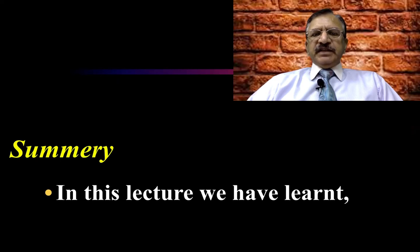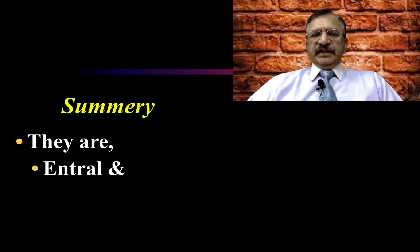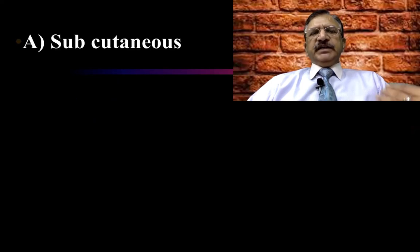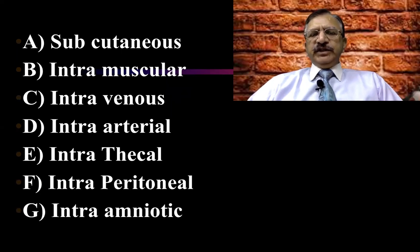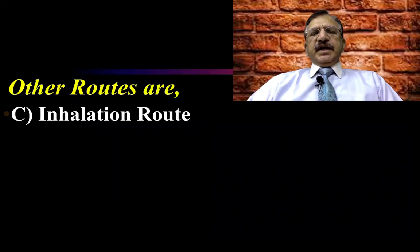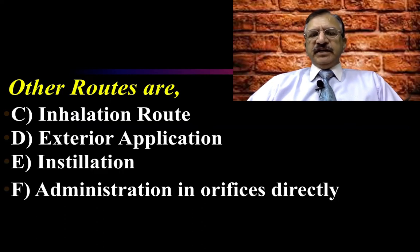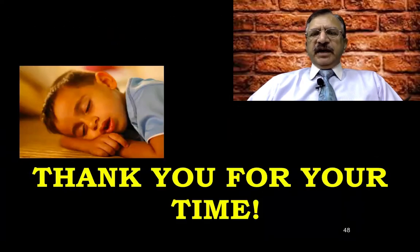In summary, we have learned the various routes of administration regarding poisons. They are the enteral and parenteral routes. The parenteral routes include subcutaneous, intramuscular, intravenous, intra-arterial, intrathecal, intraperitoneal, and intra-amniotic. Other routes include inhalation, external application through the skin, installation, and administration directly into the orifice. Thank you very much. Take care. Allah Hafiz.